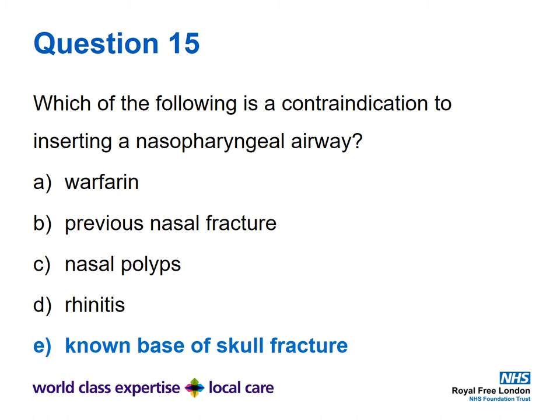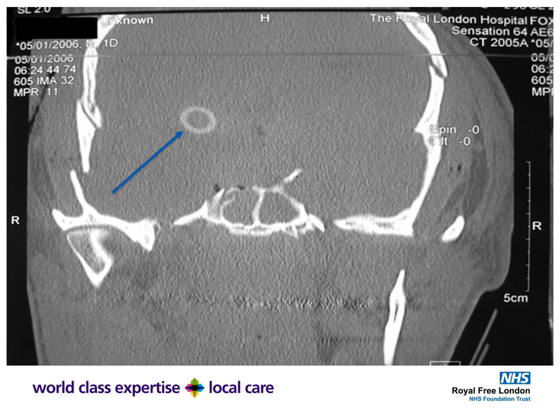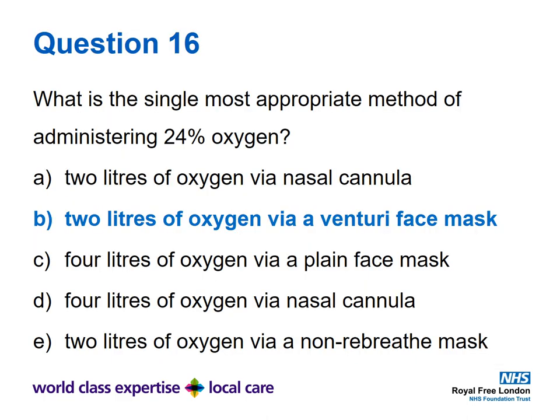Question fifteen covered contraindications to inserting a nasopharyngeal airway. The answer is E. Options A, B, and C require care; D is just an inflamed nose. For warfarin, you can still insert a nasopharyngeal airway with caution. Similarly, nasal fractures depend on orientation, and nasal polyps require plenty of lubricant. A gruesome image shows the outline of a nasopharyngeal airway that has gone transsphenoidal, with the ring effect visible.